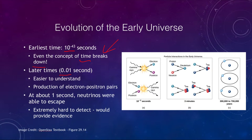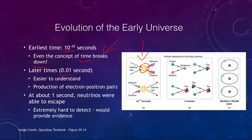At about one hundredth of a second we have a slightly easier understanding. This is when we would have had electron and positron pairs forming — two gamma rays with lots of energy could come together to create an electron and a positron, and then that positron and electron could meet and form two gamma rays again. It was a constant switching back and forth between matter and energy.